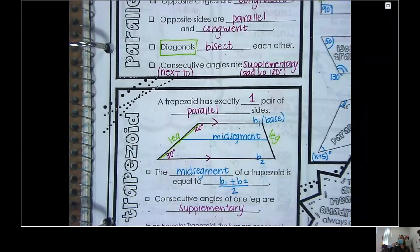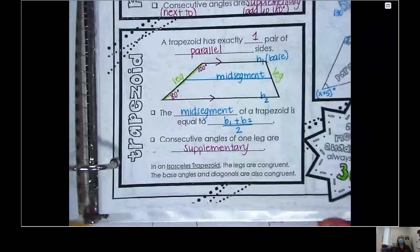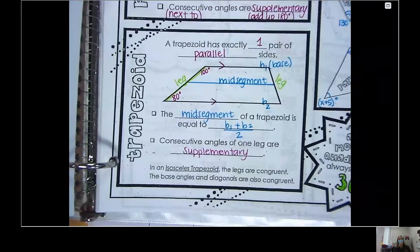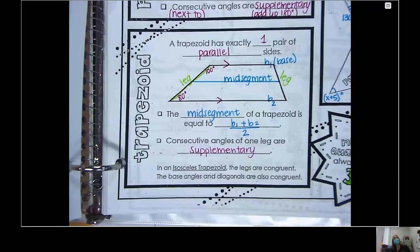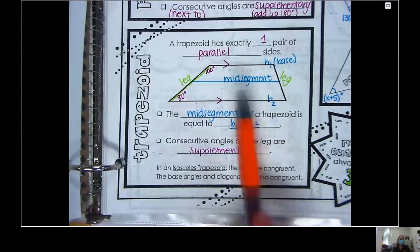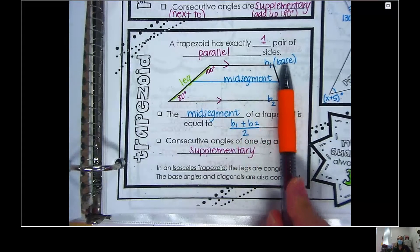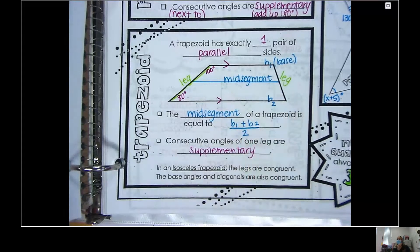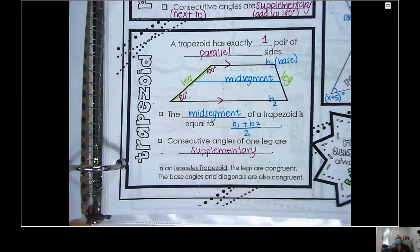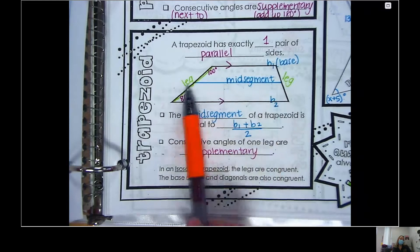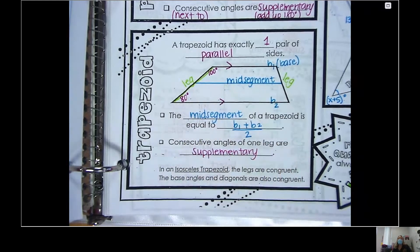Looking at our doodle notes from before. Down at the bottom we've got our trapezoid that has exactly one pair of parallel sides. The top and the bottom are called your bases. The line in the center is called the mid segment, which makes sense because it's in the middle. And then these two sides on the edges are called legs.